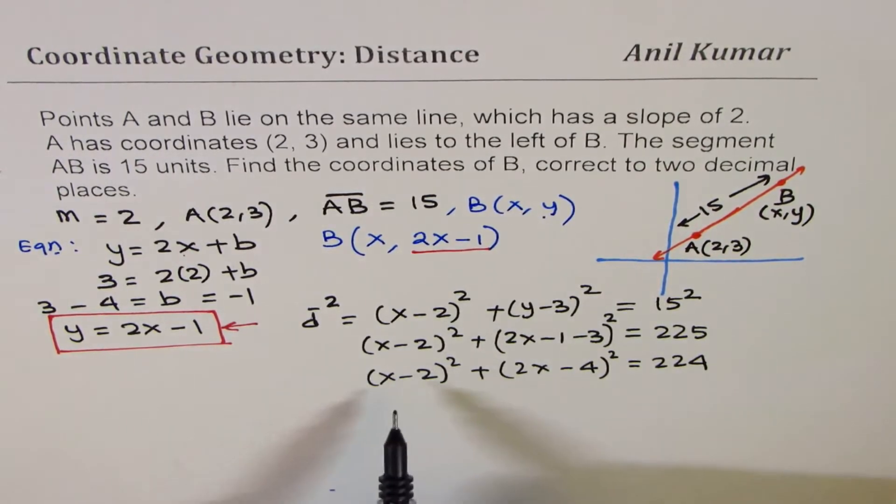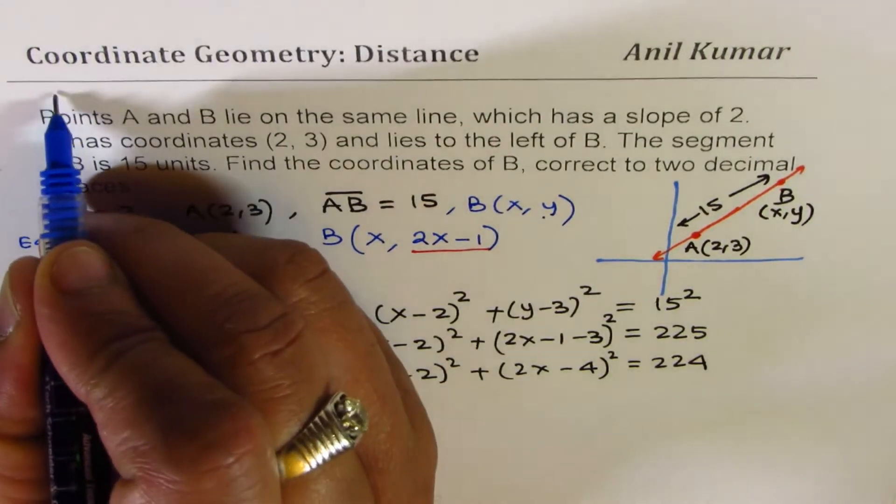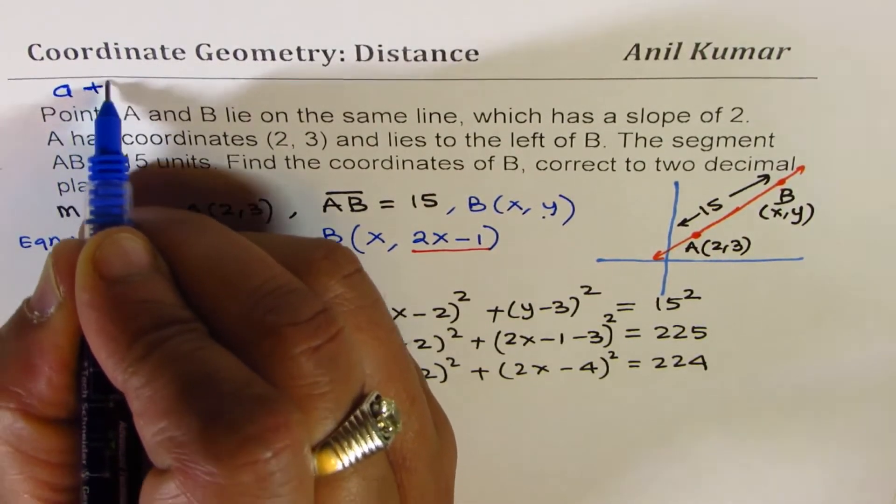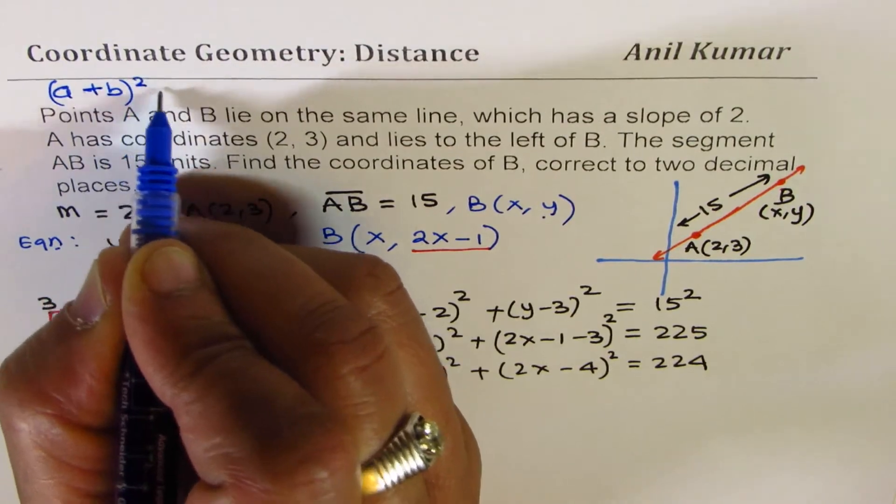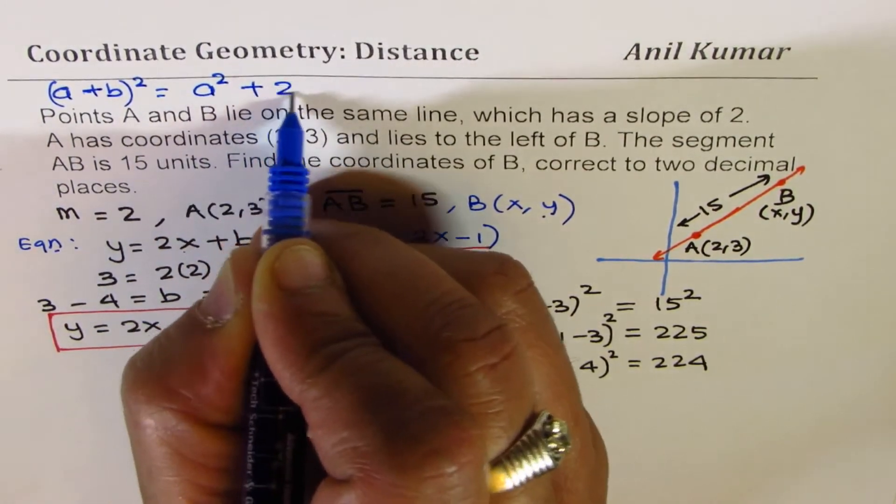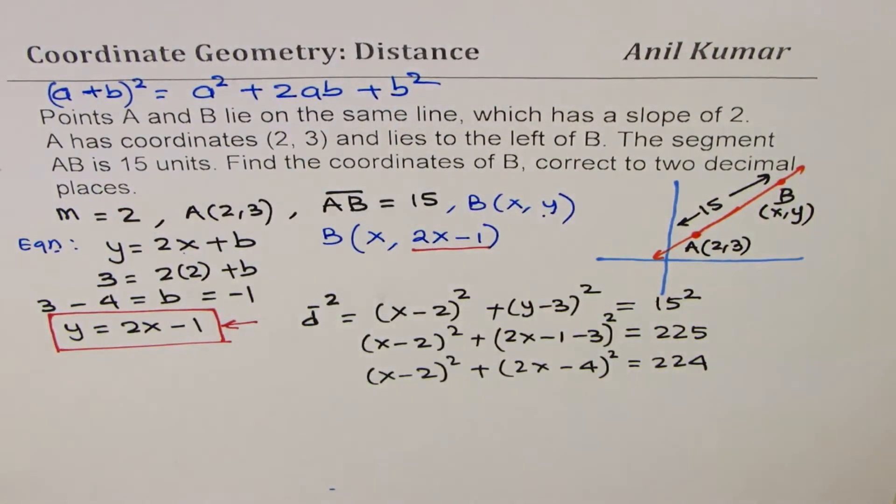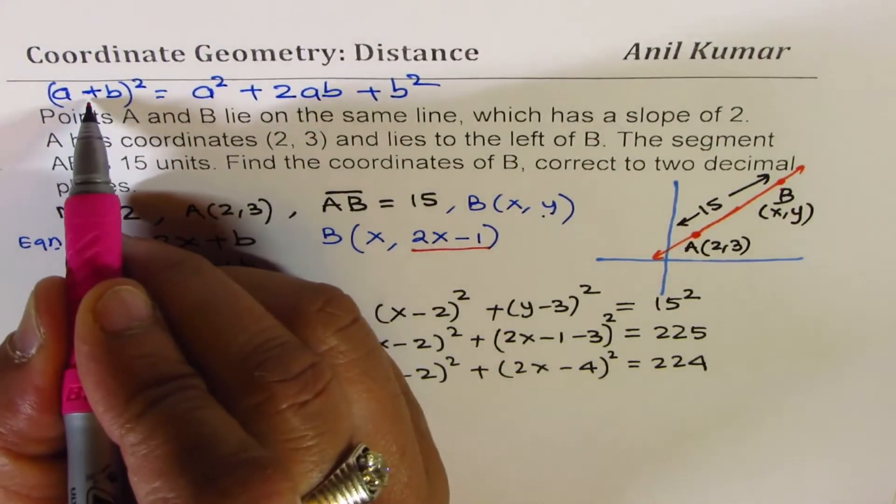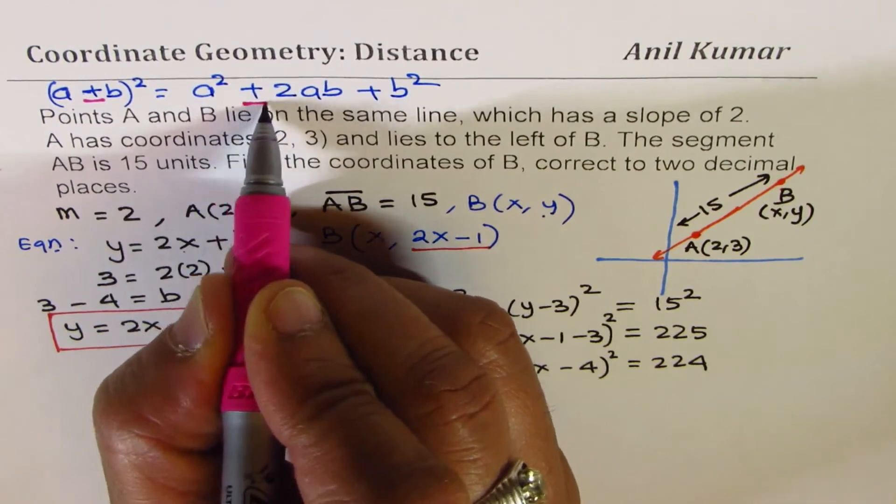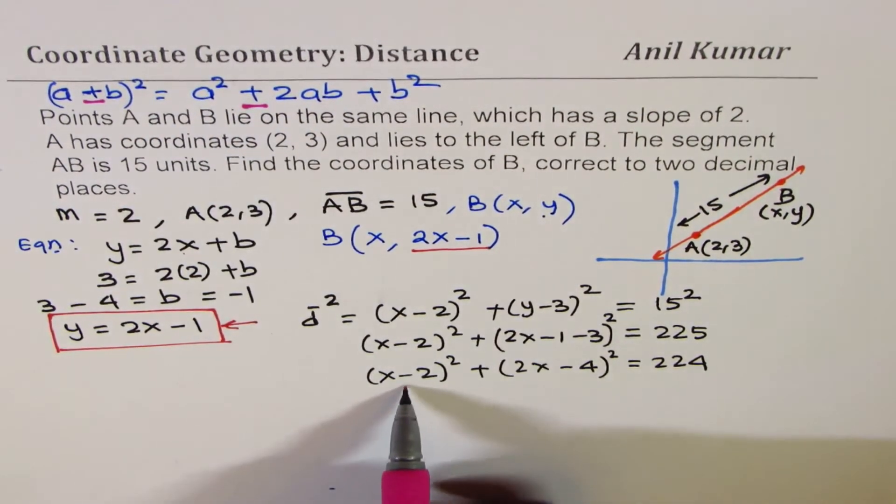(x - 2)² is what? Well, to expand, we have to use the formula, which is, if I write (a + b)², it really means it is a² + 2ab + b², right? In case we have minus here, then this is minus, which is the case here.